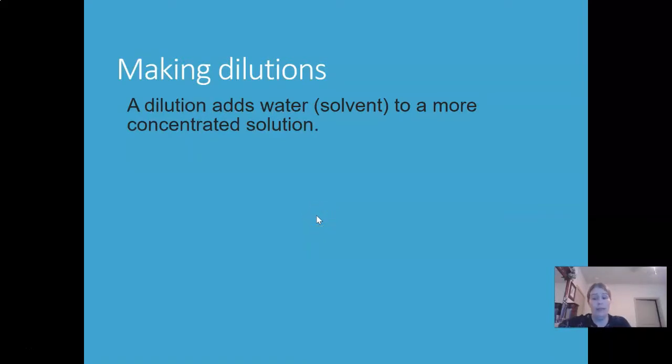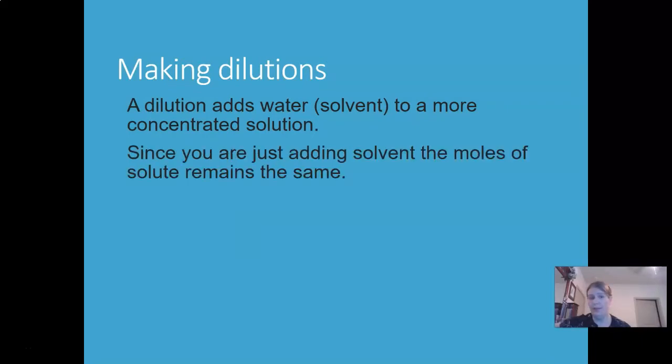Another option if we need a solution is to dilute an existing more concentrated solution. A dilution adds water or solvent to a more concentrated solution. Since you're just adding solvent, the moles of solute remains the same. That goes back to the formula we always use for dilutions: molarity times volume equals moles. Since the moles are the same in the dilute solution, M1 V1 equals M2 V2.